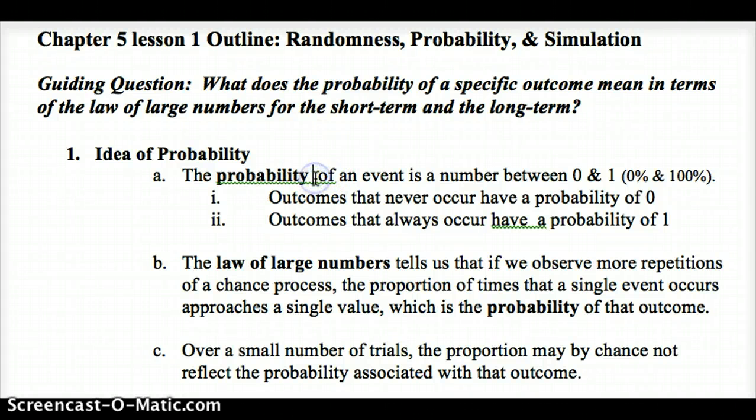This is Chapter 5, Lesson 1 and 2 on probability rules, randomness, probability, and simulation. So the idea of probability. And the question to keep in mind is, what does the probability of a specific outcome mean in terms of the law of large numbers for the short term and the long term? So keep thinking about that as we go through this lesson.